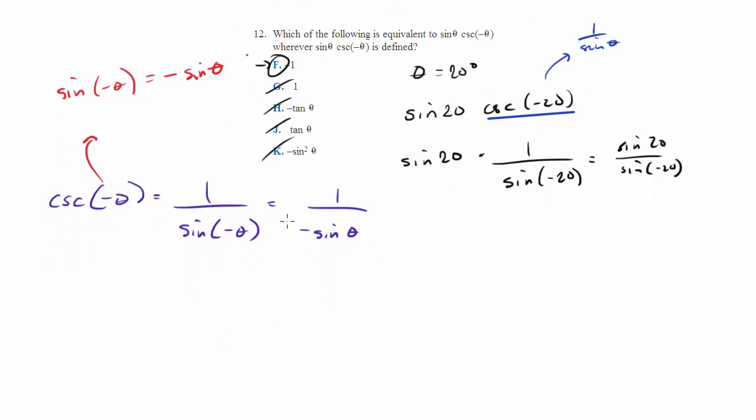And now we're going to go ahead and do our multiplication. So we had sine of theta times 1 over negative sine of theta. The sine of thetas are going to cancel, and we're left with negative 1, which is, of course, what we got for f.